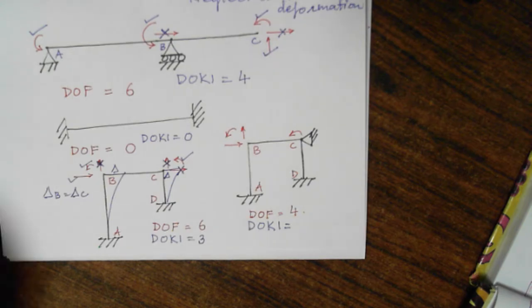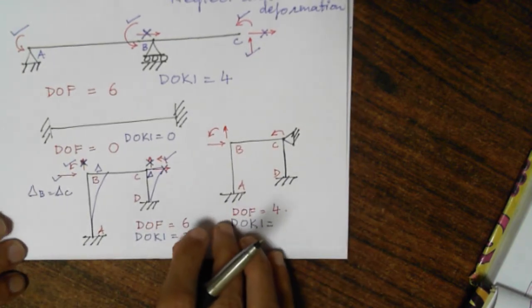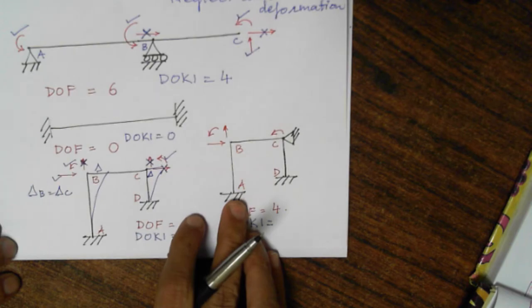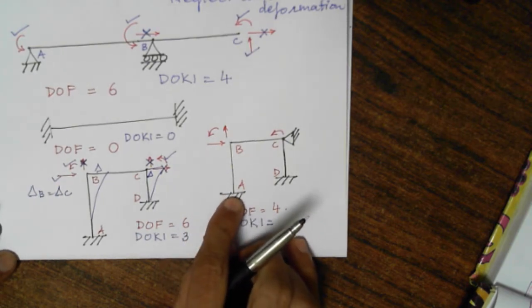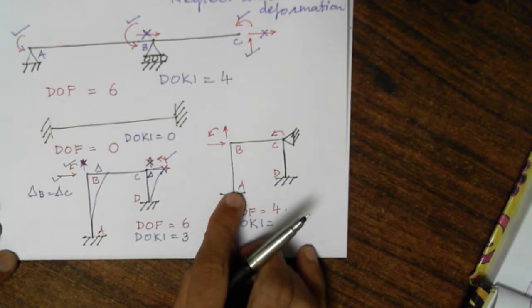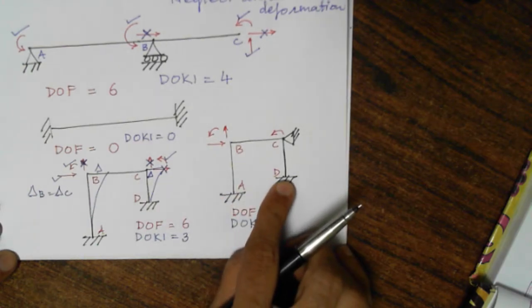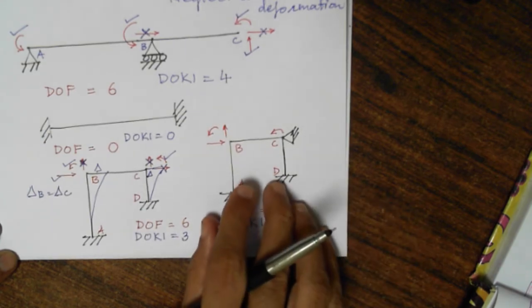Time's up — let us discuss. Those who have sent me the answers, let us check. At A, degree of freedom is 0, so degree of kinematic indeterminacy is 0. At D, degree of freedom is 0, so degree of kinematic indeterminacy is also 0.